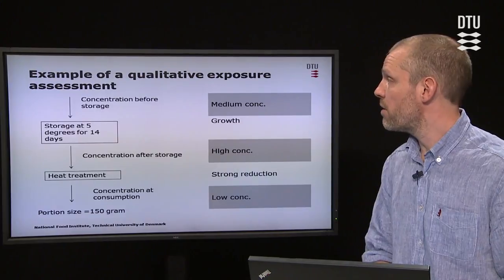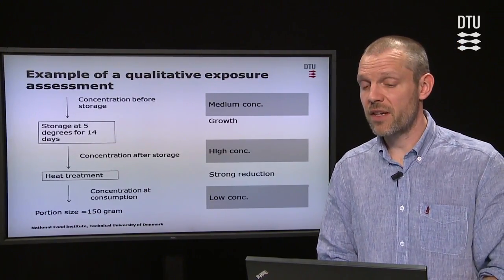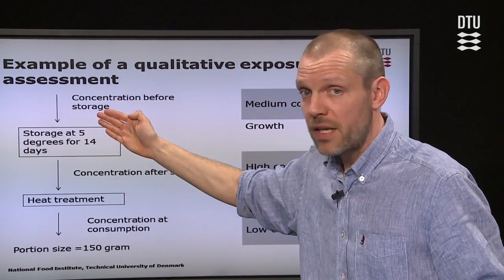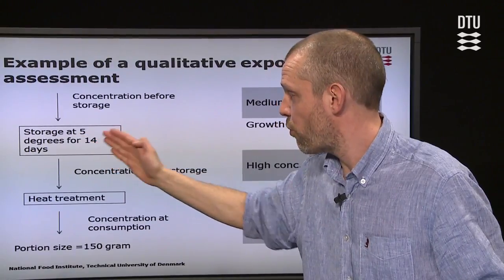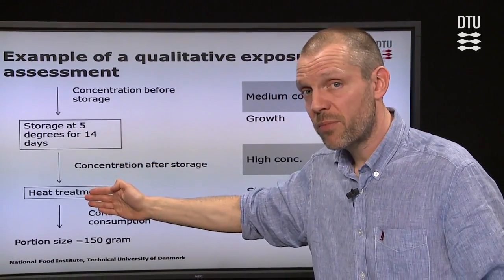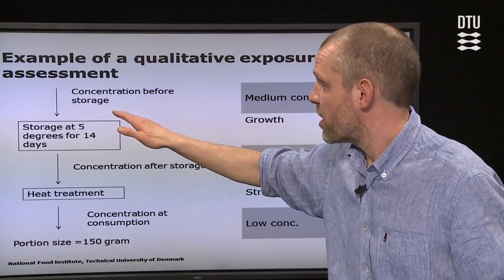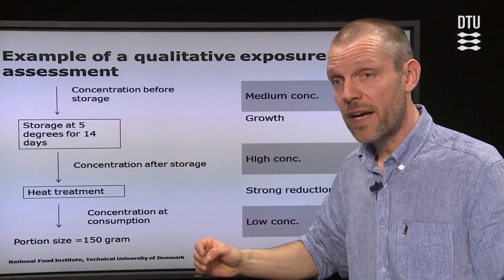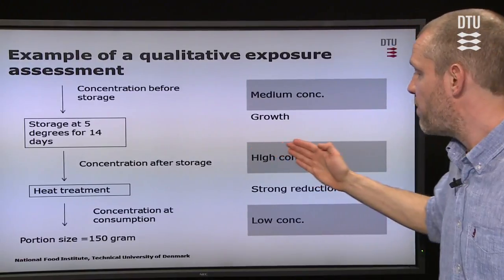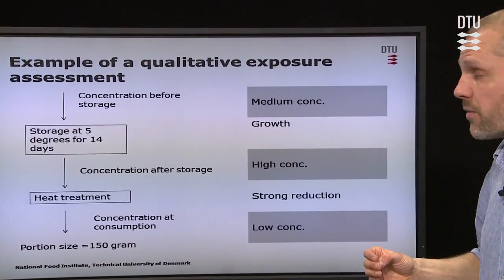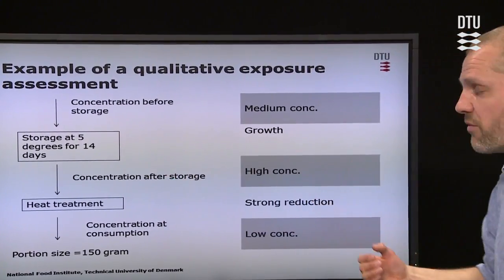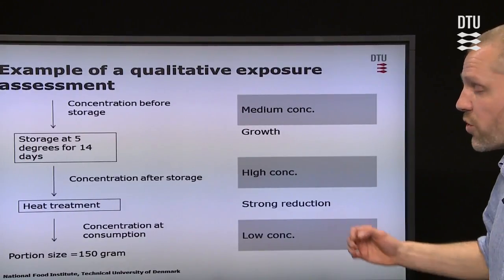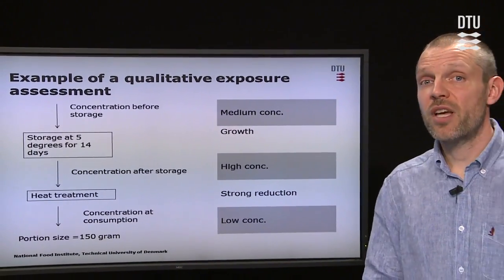Here is an example of how we use the qualitative and quantitative assessment. We have a short pathway starting somewhere in production, then storage at 5 degrees for 14 days, followed by a heat treatment before consumption. In the qualitative exposure assessment, we have a medium initial concentration. We store it at 5 degrees for 14 days and we have growth, so after storage we have a high concentration. Then we apply a heat treatment which has a strong reduction effect, so at consumption we have a low concentration again. This is a qualitative expression of the amount of CFUs in the product at consumption.